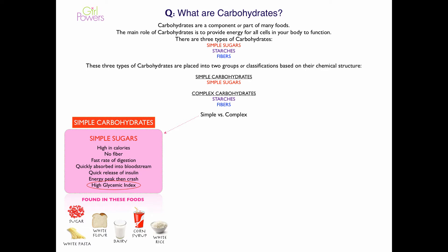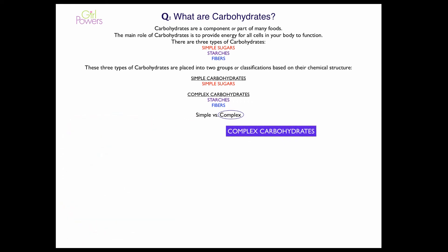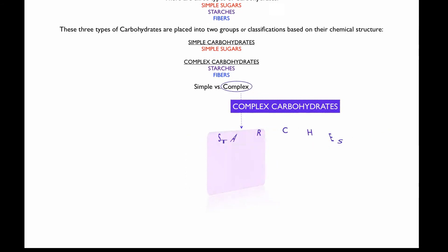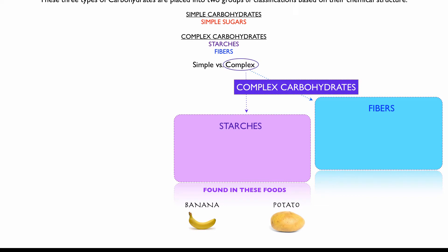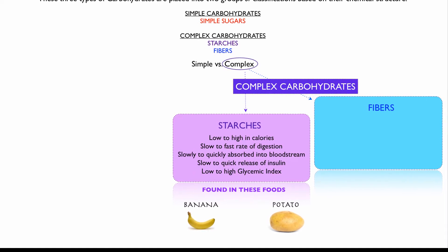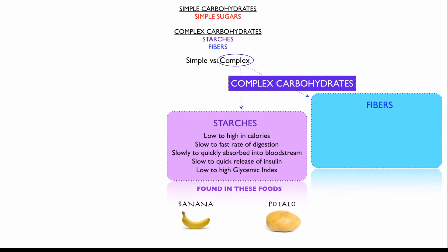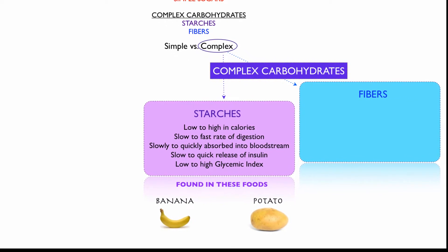Now we'll take a look at the complex carbohydrates. The complex carbohydrates include starches and fibers. Starches are found in foods like bananas and potatoes, among many others. Starches can be low to high in calories, slow to fast in rate of digestion, slowly to quickly absorbed into the bloodstream, have a slow to quick release of insulin, and be low to high on the glycemic index. So starches are very much in a range, whereas simple sugars were high on all of these factors.